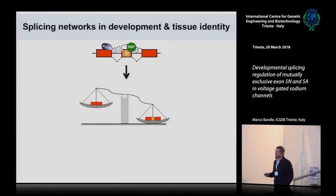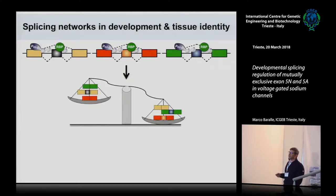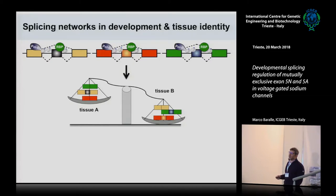I showed this for one gene, but this does occur in several other genes, and can also occur within the same gene several times, leading to a series of different isoforms depending on whether the exon is included or excluded. This whole subset at the end of the day can define tissue A versus tissue B, health and disease, or the fetal versus the adult tissues.